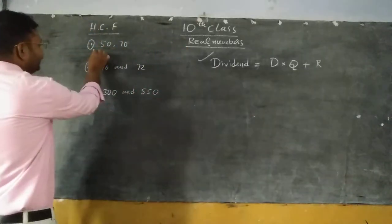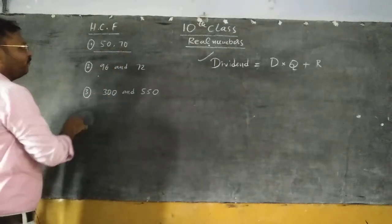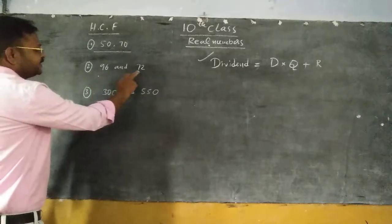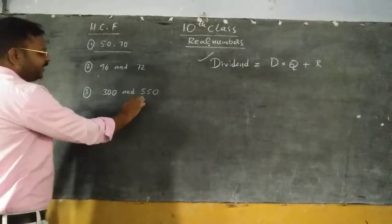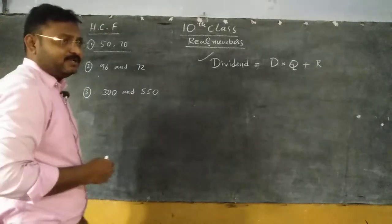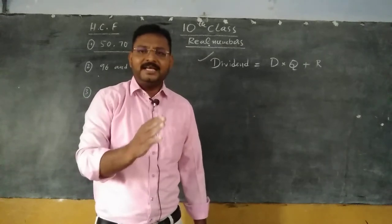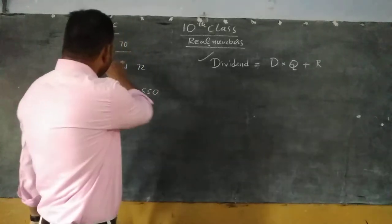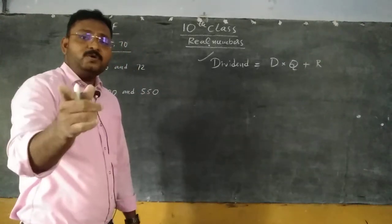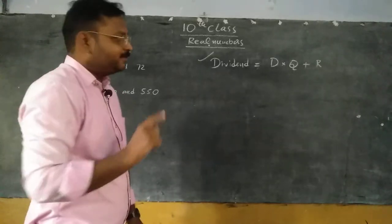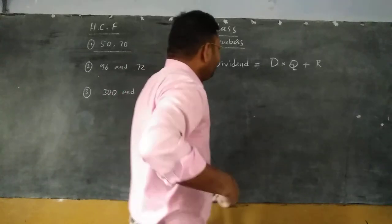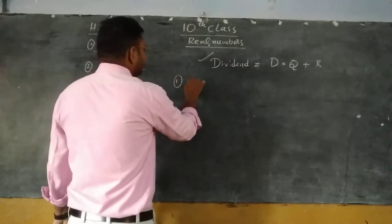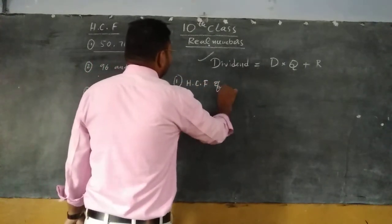By using this rule, find the HCF of two numbers. The problems are: find the HCF of 50 and 70; find the HCF of 96 and 72; and find the HCF of 300 and 550. What is the full form of HCF? Highest common factor. Now I am going to start finding the HCF of 50 and 70. First problem: HCF of 50 and 70 by using Euclid's division lemma.